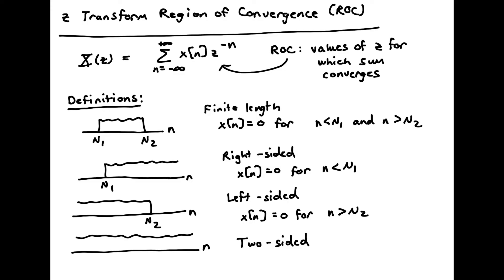We need a few definitions of different types of sequences we might work with when taking the Z-transform. A finite length sequence is one where X of N is zero outside some N1 to N2 region. A right-sided sequence is zero to the left of some integer N1 and non-zero to the right. A left-sided sequence goes to zero after some integer N2. And a two-sided sequence is simply not left- or right-sided.